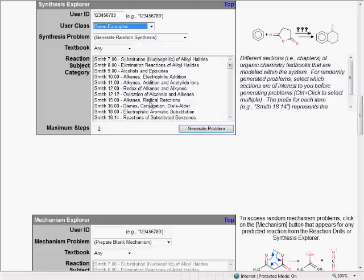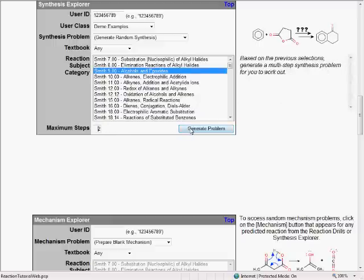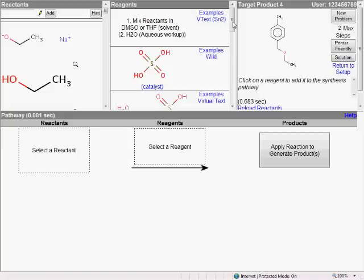For example, let's try a problem based on the Alcohols and Epoxides chapter, which requires no more than two steps to solve. Click on Generate Problem, and then the system will prepare a synthesis problem based on the selections we just made.